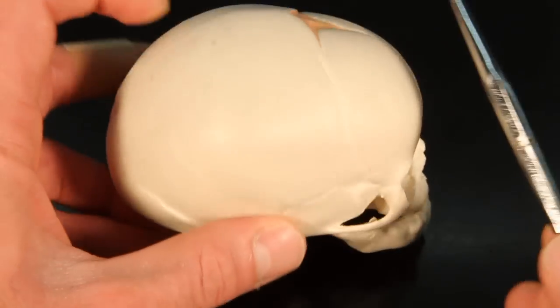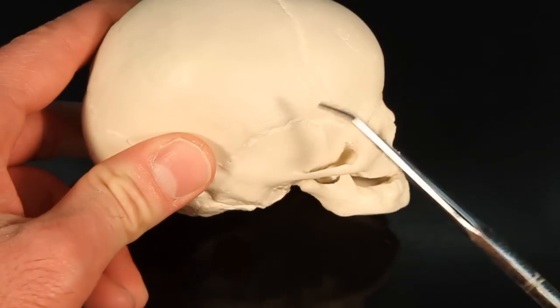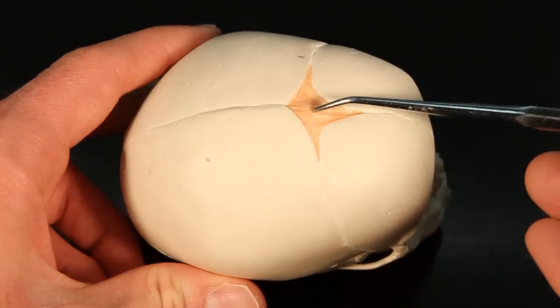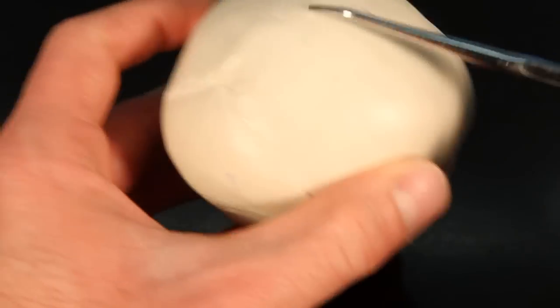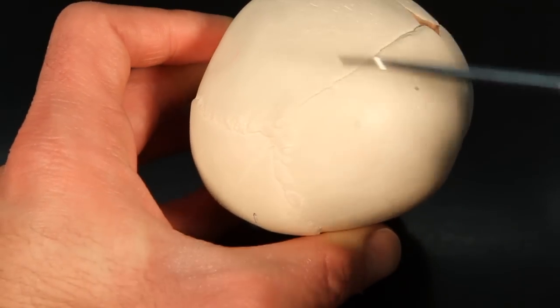Now the fontanelles, all four of them, are going to be soft spots where the bones have not fully formed. So the anterior fontanelle is going to be between the frontal and parietal. Posterior fontanelle is between the parietal and occipital.